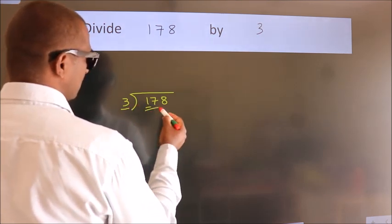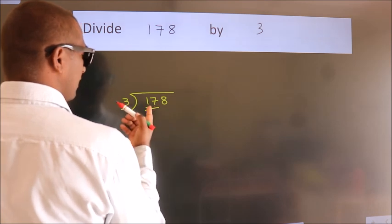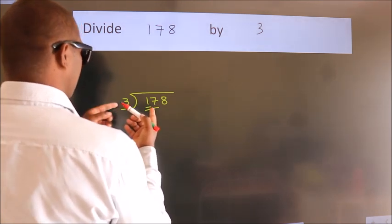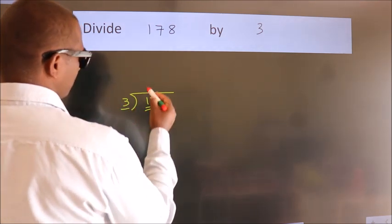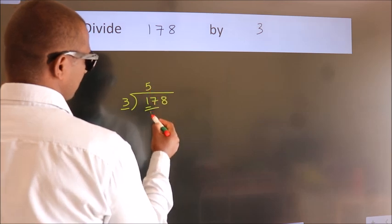So we should take 2 numbers, 17. A number close to 17 in the 3 table is 3 fives, 15.